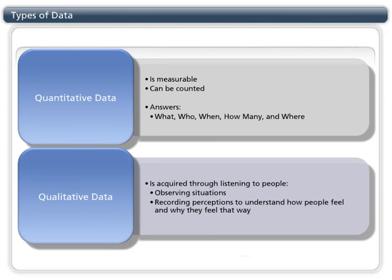Qualitative data is acquired through listening to people, observing situations, and recording perceptions to understand how people feel and why they feel that way. While quantitative data can tell us what is impacting our communities, it can't tell us why. That's where qualitative data comes in.